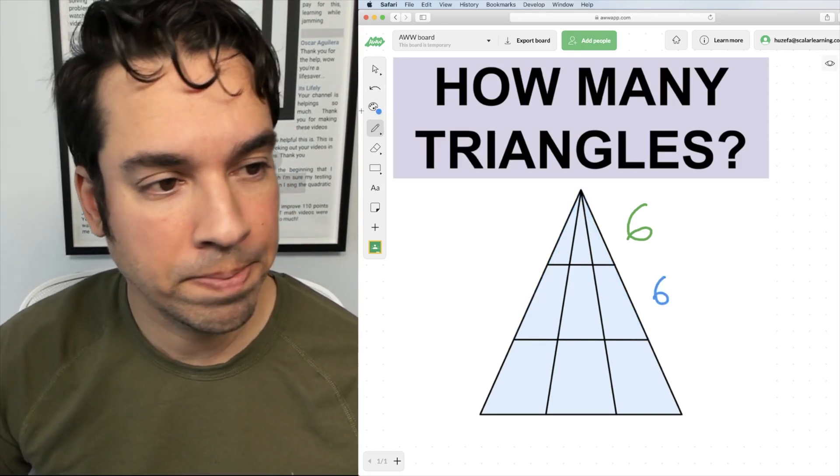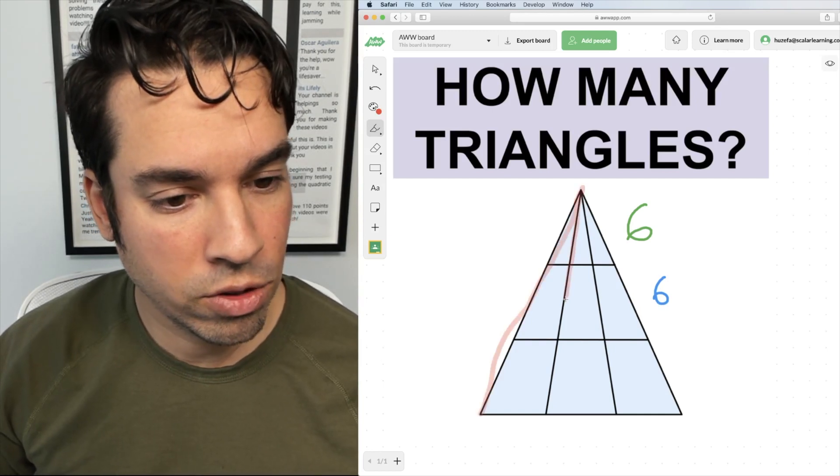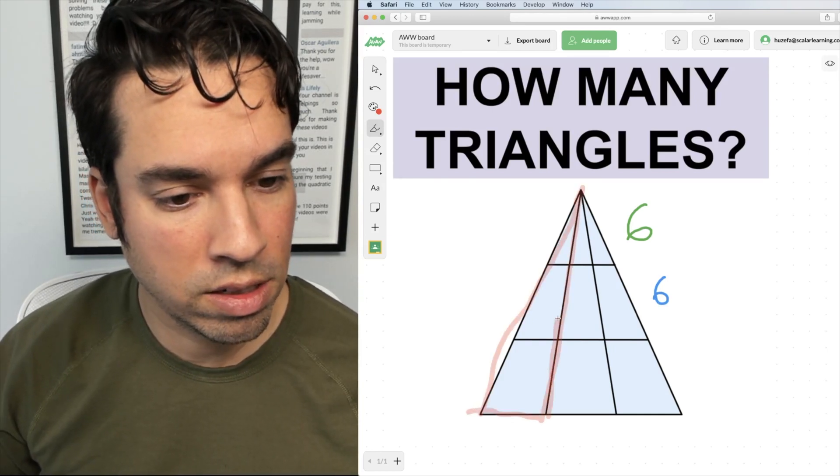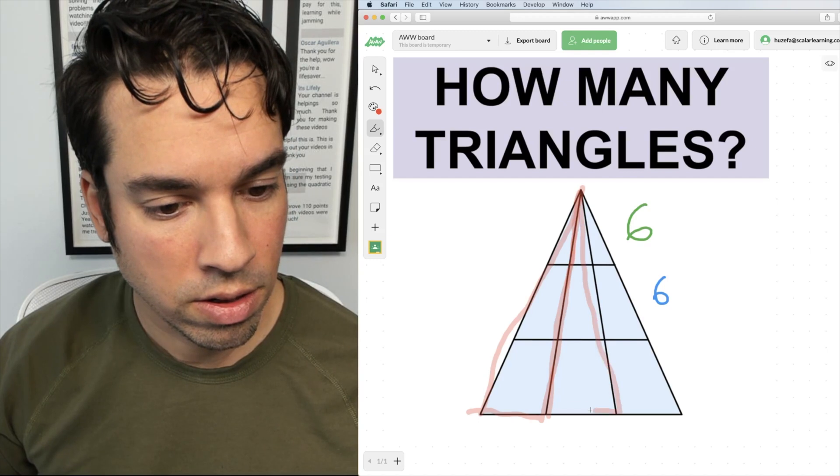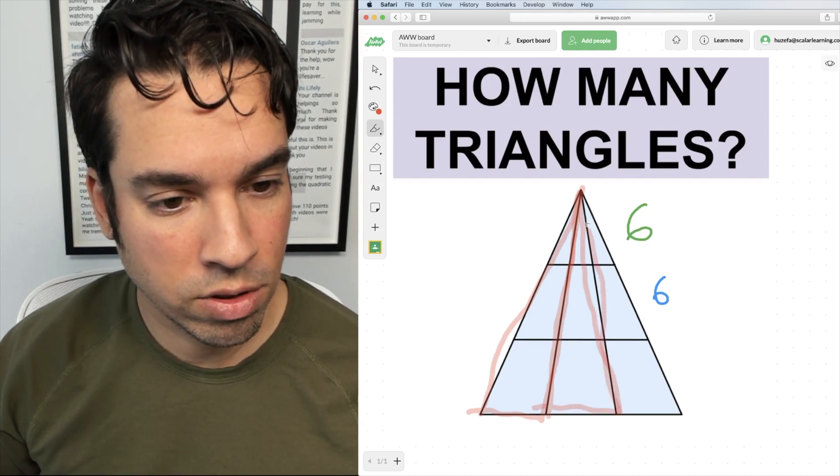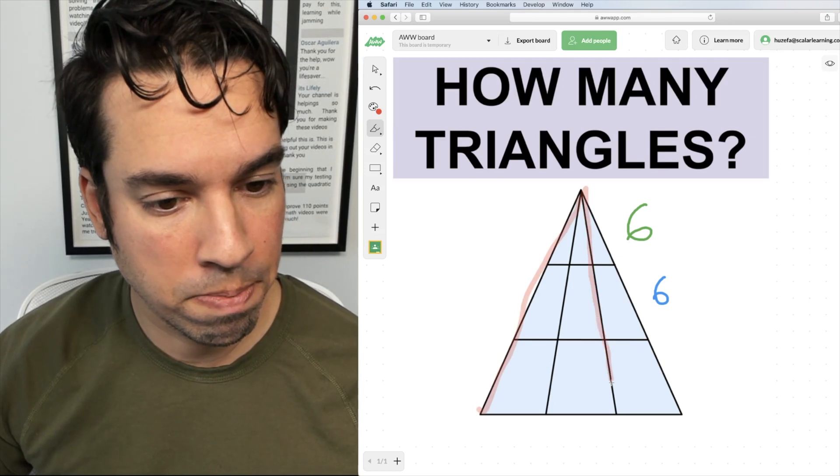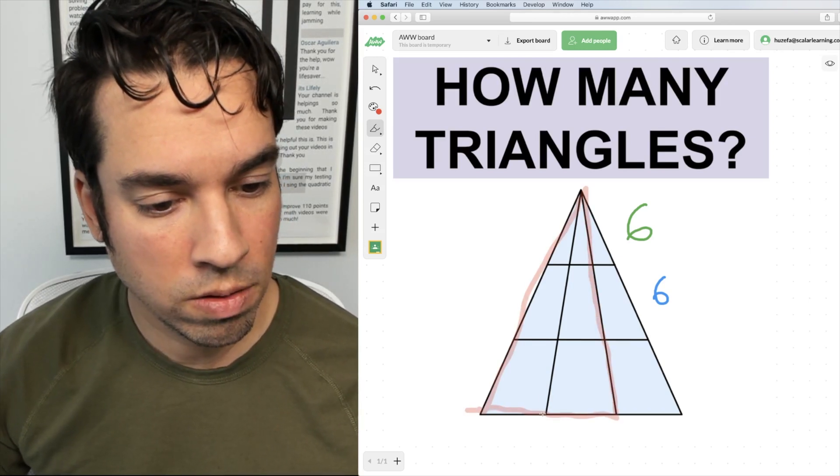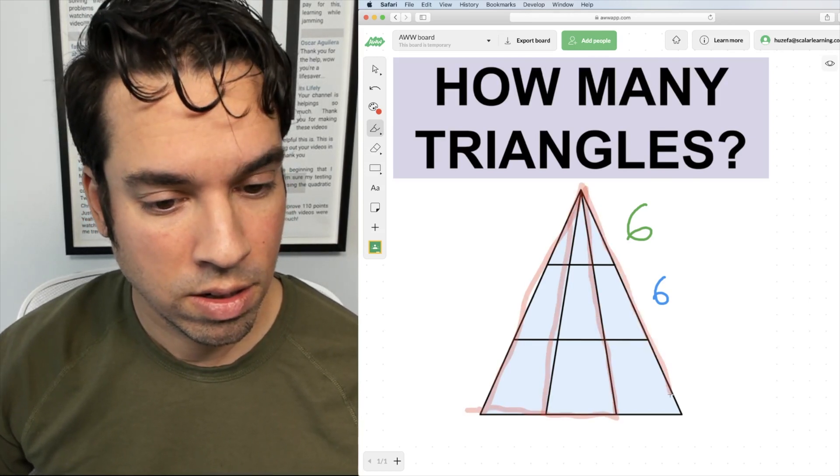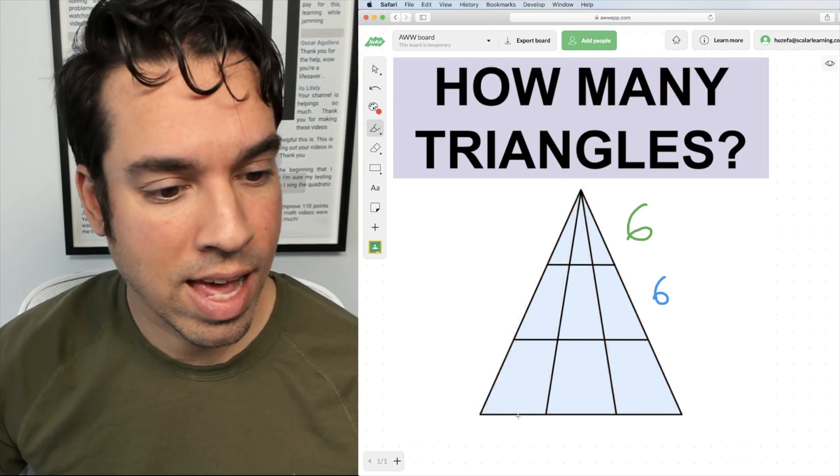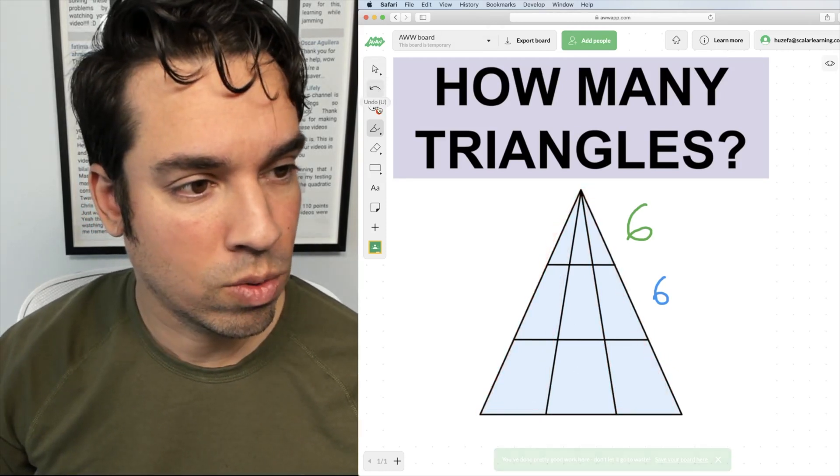Now we can kind of see a pattern forming. So again we got the skinny sliver here. We got the skinny sliver here and we got the skinny sliver here. Then we do big one or bigger one. That's two more that makes five and then last but not least a gigantic one.